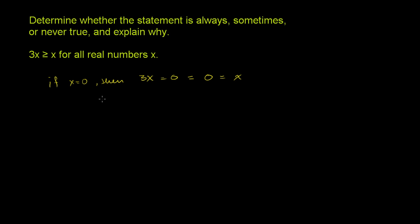So in this situation, if x is equal to 0, 3x is indeed greater than or equal to x. In this case, it is equal. So we know that it's definitely not never true.